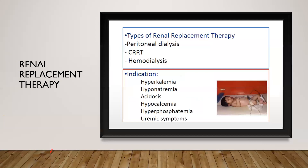Coming on to renal replacement therapies: if supportive care is insufficient, early initiation of renal replacement therapy is indicated. Indications include persistent hyperkalemia, hyponatremia, acidosis, and uremic symptoms. The three modalities used in neonates are peritoneal dialysis — the most commonly done in most centers — CRRT, and hemodialysis.